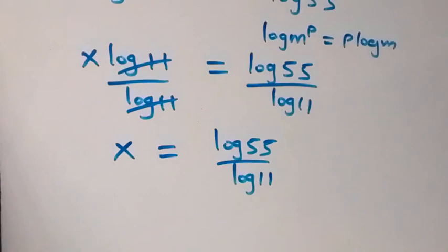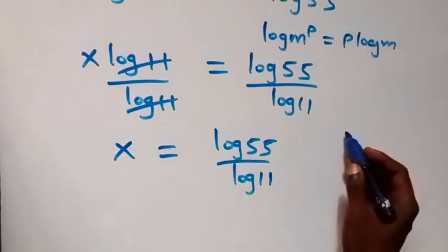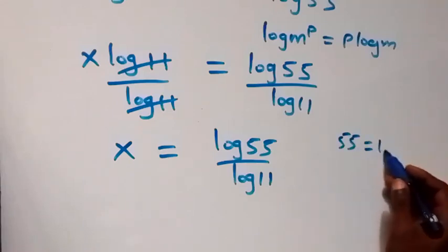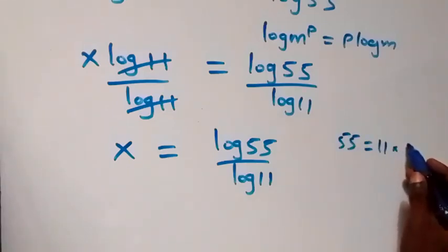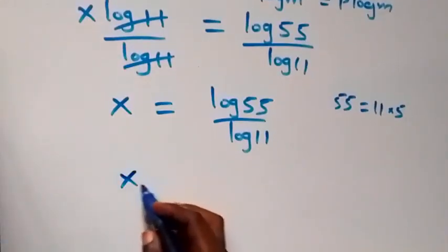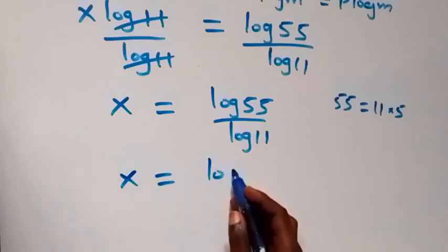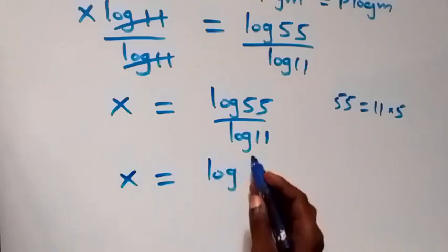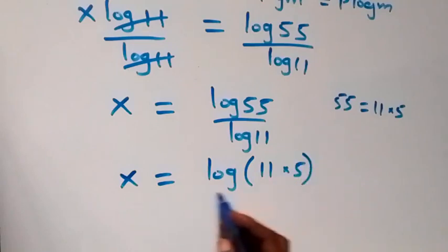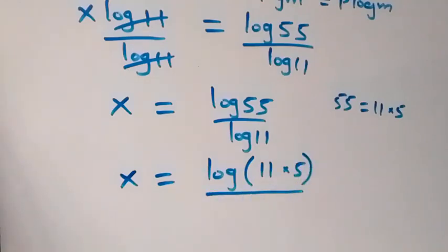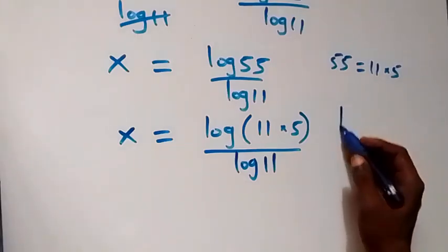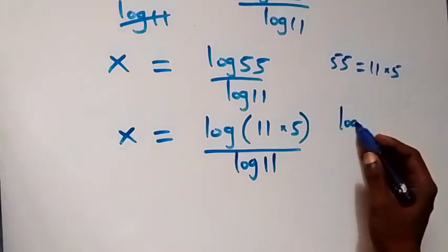We can also write 55 as 11 times 5, so we have x equals to log of 11 times 5, over log 11. From here, when we apply the product rule of logarithms, reading from log a times b...